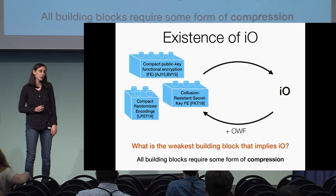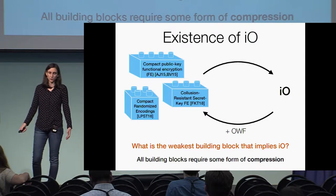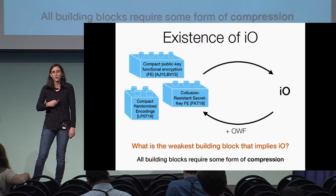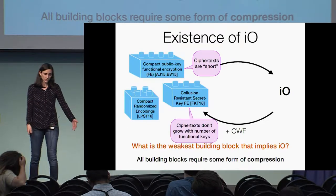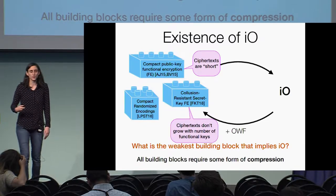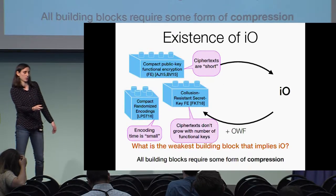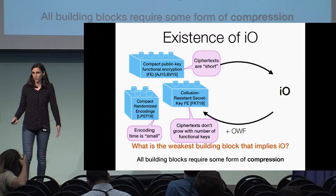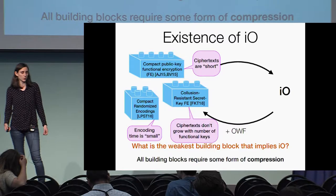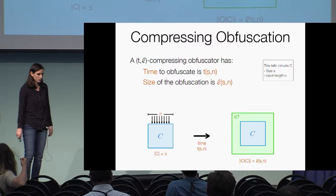The question that motivates this work is understanding what is the weakest building block which is known to imply IO. Towards answering this, one thing we can notice is that each of these building blocks requires some sort of compression. In particular, in the case of compact functional encryption, the ciphertexts are short. In the case of collusion-resistant functional encryption, the ciphertexts don't grow with the number of functional keys, and similarly in the case of randomizing codings. So if we want to base IO on something weaker, compression might be inherent towards achieving IO. For this reason, we focus on the weakest primitive which implies IO, namely compressing obfuscation.